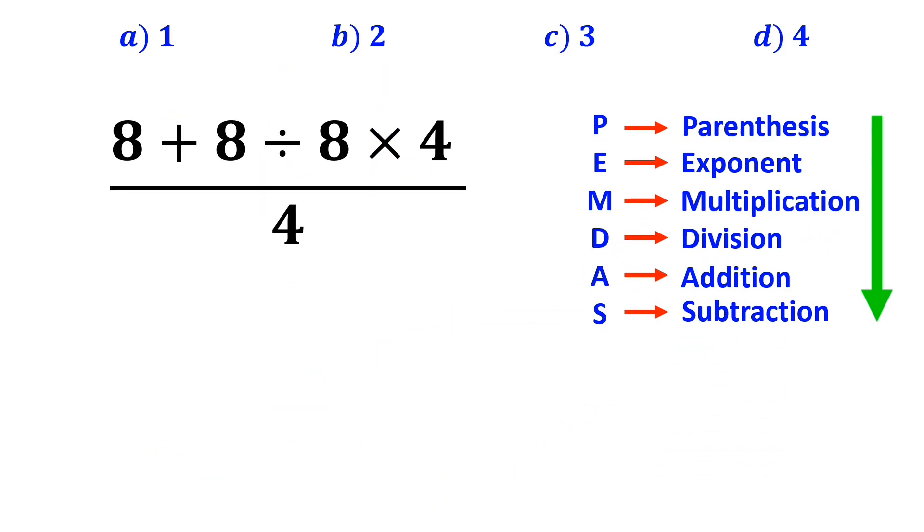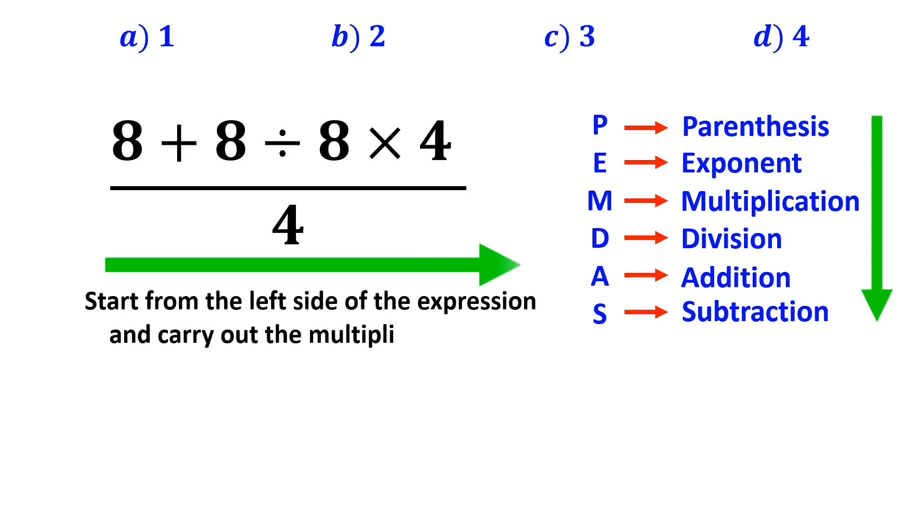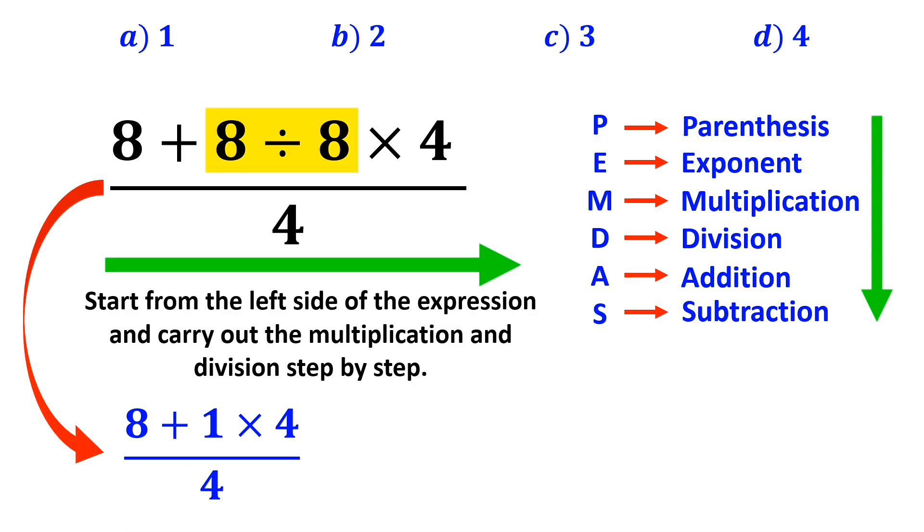In this case, the best thing to do is to start from the left side of the expression and carry out the multiplication and division step by step. So, first we go for the division between the two eights, and we can rewrite the whole expression as 8 plus 1 times 4 over 4.